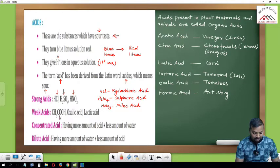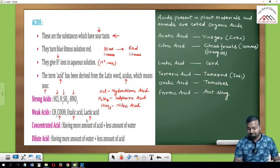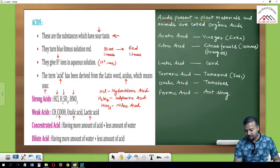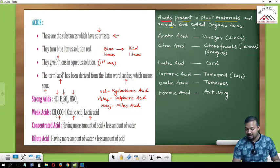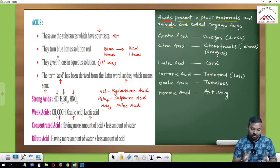Weak acids ke examples hain: CH3COOH means acetic acid, next is oxalic acid, and next is lactic acid. Acids present in plant materials and animals are called organic acids. Organic acids are generally weak acids, while acids made through chemical reactions in the laboratory are generally strong acids.